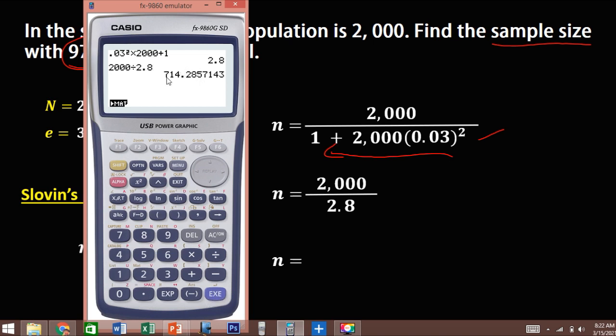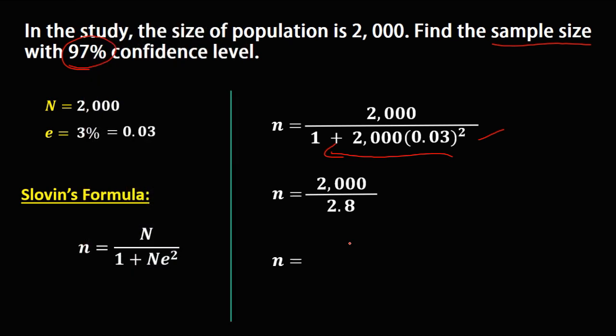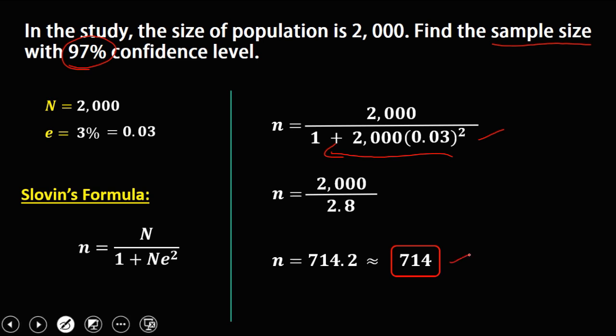To solve for the sample size, we have 2000 divided by 2.8, which gives 714.2. Just take the first decimal — there's no need to round off further. Since the sample size must be a whole number, the final answer is 714. This is now the sample size.